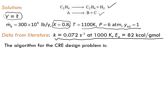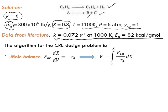The mass flow rate of the product, ethylene, is given. We don't like to deal with mass flow rate when we have reactions, so we need to convert it to molar flow rate. Let's design the reactor and find its volume using the five-step algorithm. The first step is to write the mole balance. For a plug flow reactor, we can write: V equals the integral of FA0 over (−rA) dX.